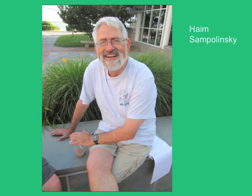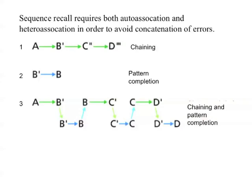What Haim was curious about was how you would build a nerve network that not only stored one memory and the associations that are part of that memory, but also stored a sequence of memories. For instance, you came into the room, you opened your book, then you talked to the person next to you, then the professor started the class — you have an image of a sequence of events in your memory. What Haim pointed out was that the simplest of networks, depicted here at the top, just don't work very well.